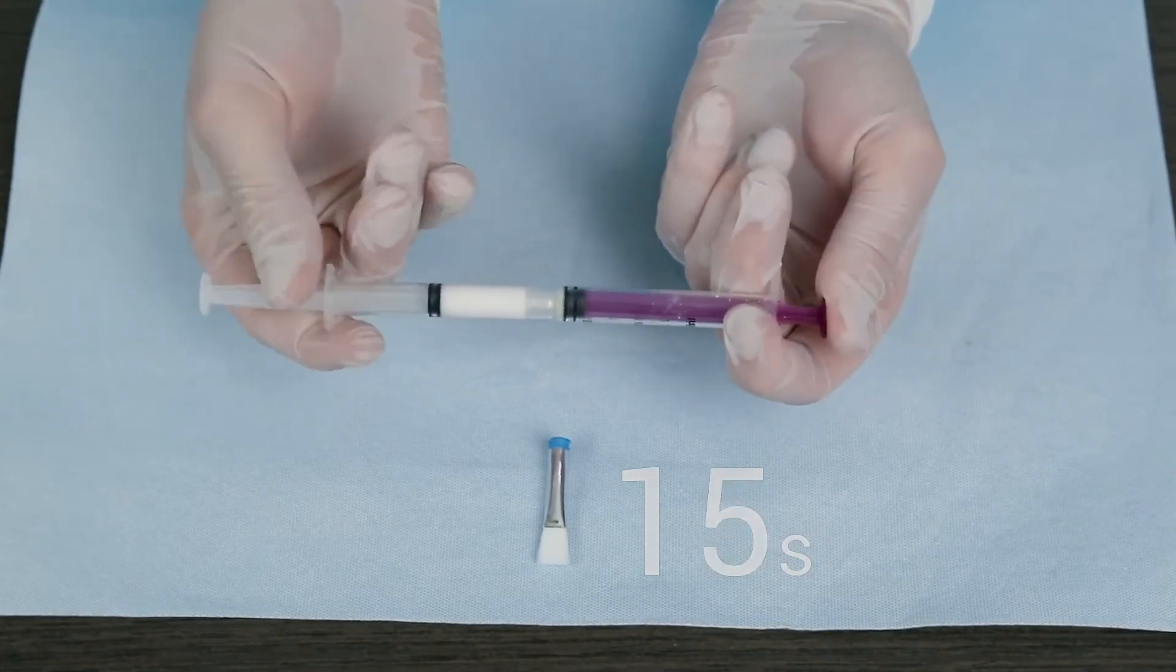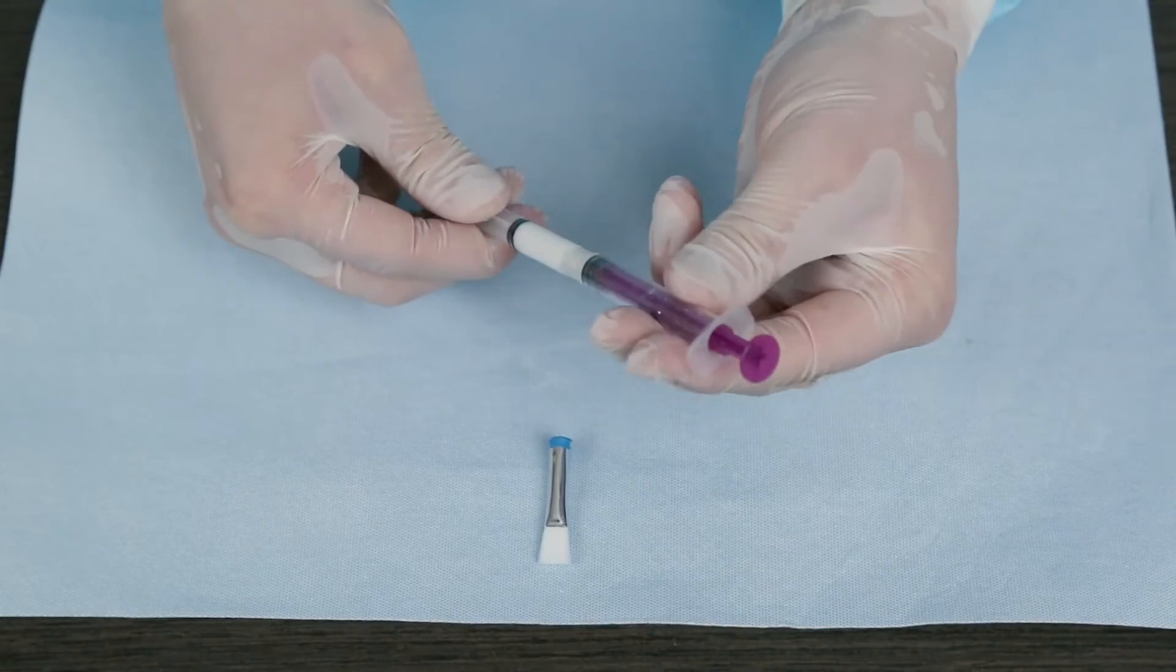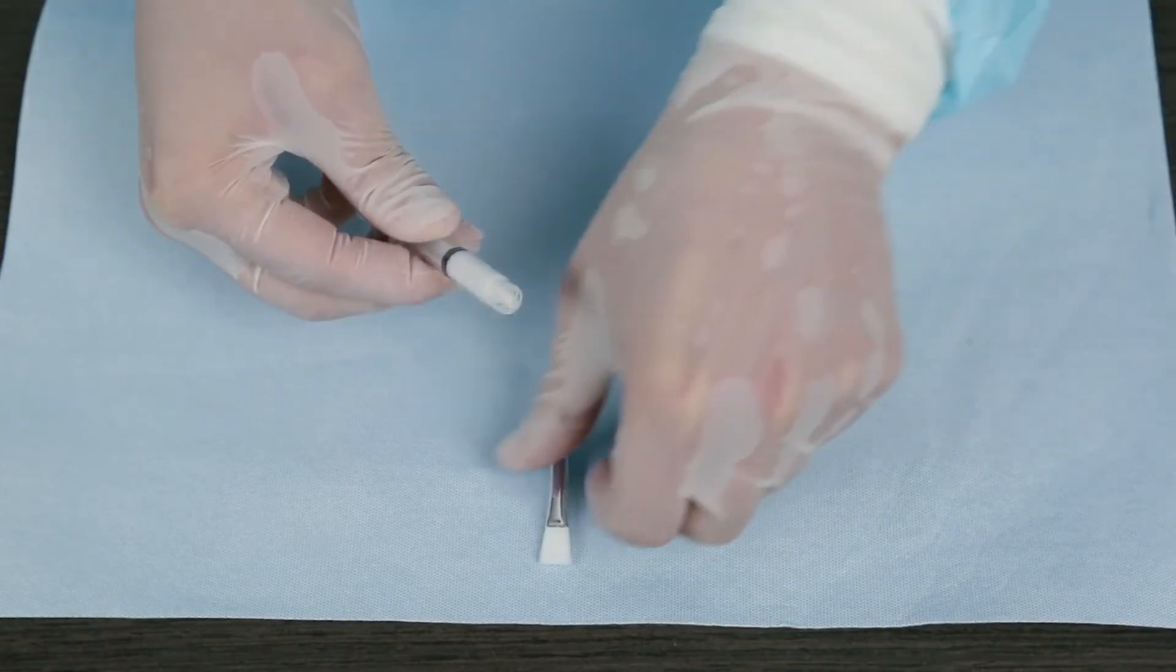Once mixed, push all the liquid into the larger male syringe. Disconnect the two syringes and attach the sterile application brush tip.